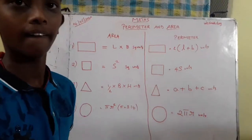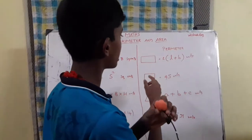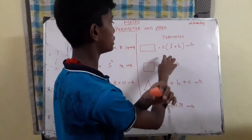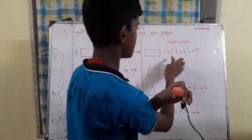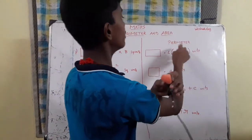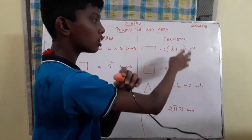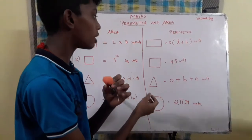This is the perimeter. Perimeter of rectangle: 2 into L plus B, length plus breadth. First, watch the brackets, track the brackets and add that. Then multiply by 2. This is in units.